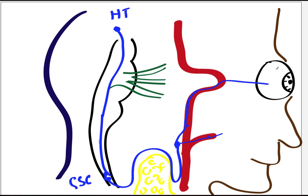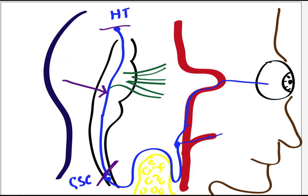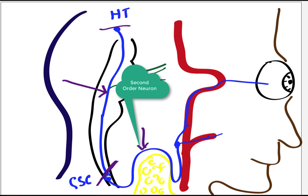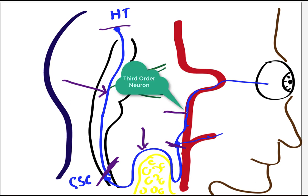We have three different neurons that are involved in the sympathetic pathway. This is the first order neuron, which starts here and ends here. Then this is the second order neuron, which starts from right here and ends here. And then we have the third order neuron that starts here and ends in the eye.